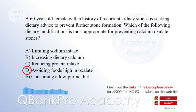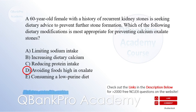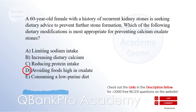Increasing dietary calcium actually helps prevent calcium oxalate stones by binding with oxalate in the gastrointestinal tract, reducing its absorption. Reducing protein intake is more relevant for uric acid stones, and consuming a low-purine diet is important for preventing those stones. Avoiding foods high in oxalate, such as spinach, rhubarb, and chocolate, is recommended to reduce the risk of calcium oxalate stone formation.